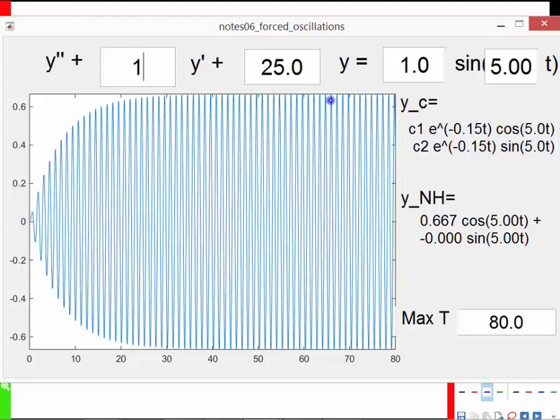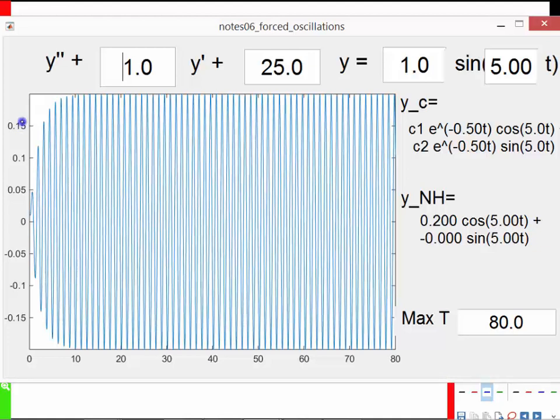We can dial that up to one or something, which would be quite coarse. Notice the amplitude is much much smaller now, by order of magnitude. So if there's a lot of damping in the system, we still get oscillations that go on forever, but the maximum amplitude that we reach is much lower.